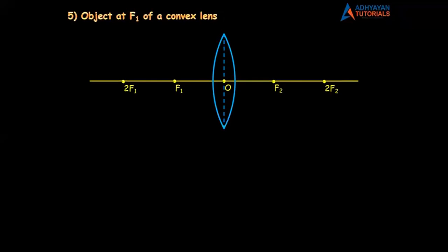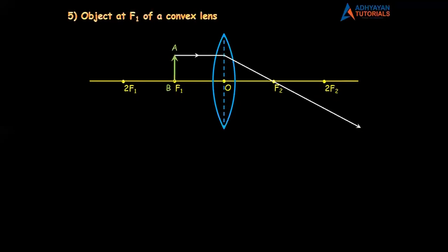Now, how to draw the basic diagram — we've discussed this many times. Look at the question directly: object at F1. I have to place the object at F1. Again I will be drawing the two rays we discussed last lecture. The first ray is parallel to the principal axis and passes through the focus. The second ray passes through the optical center and goes straight without any refraction. Trust me, the diagram is over. You might wonder about the point of intersection.